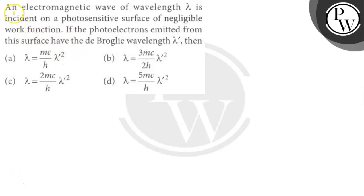Hello, let's read the question. The question says here: An electromagnetic wave of wavelength λ is incident on a photosensitive surface of negligible work function. If the photoelectrons emitted from this surface have the de Broglie wavelength λ', then what will be the answer?